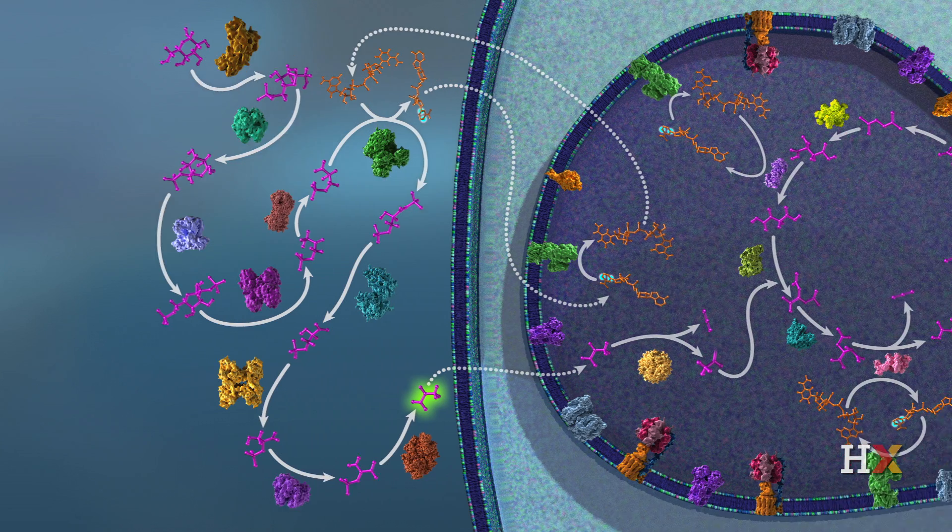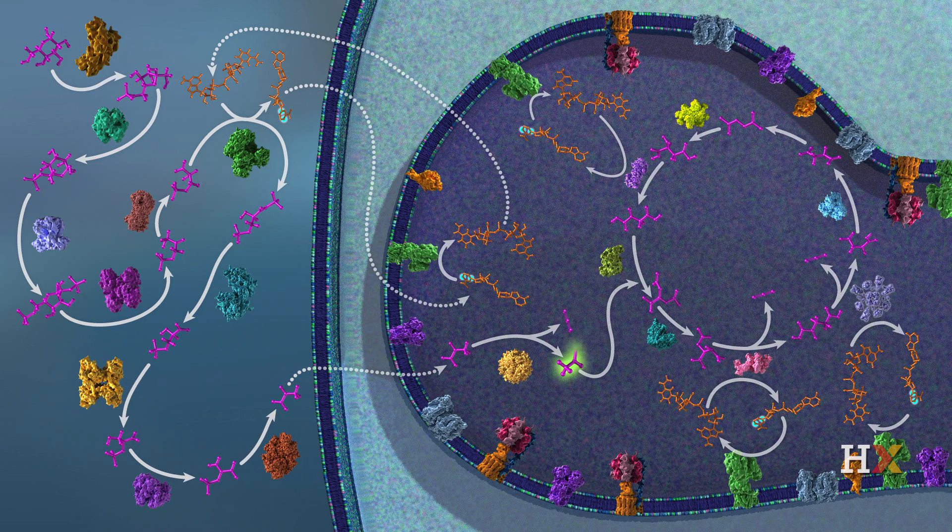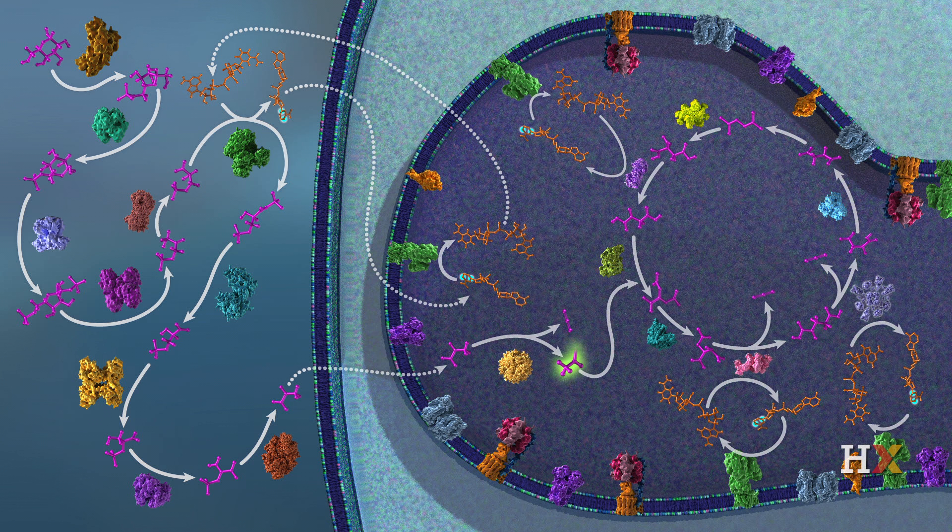These pyruvate molecules are converted into acetyl coenzyme A, also known as acetyl CoA, and this happens inside the mitochondrial matrix.